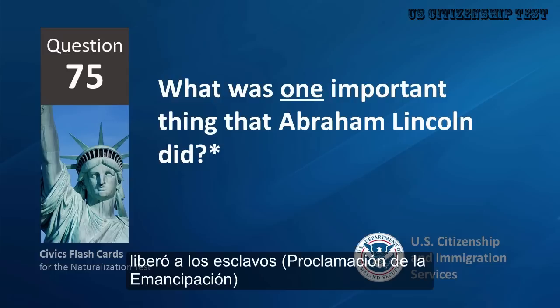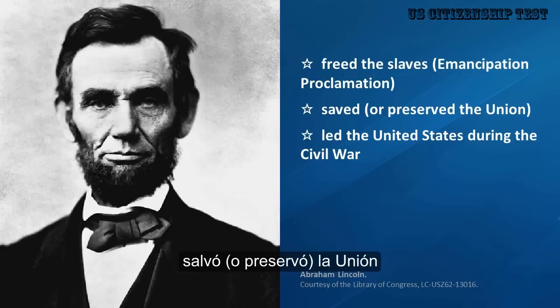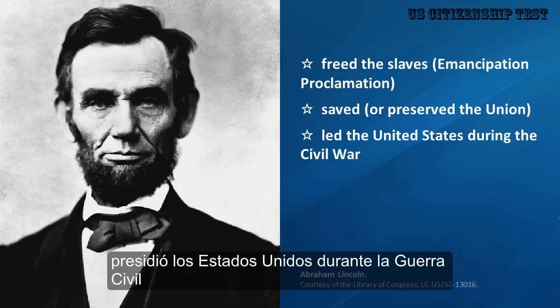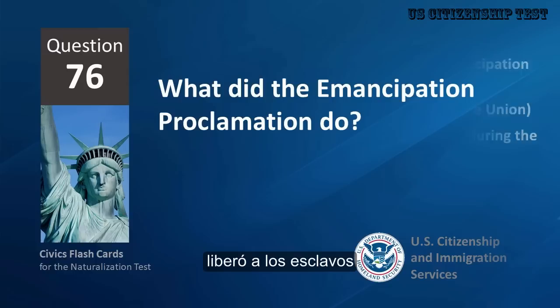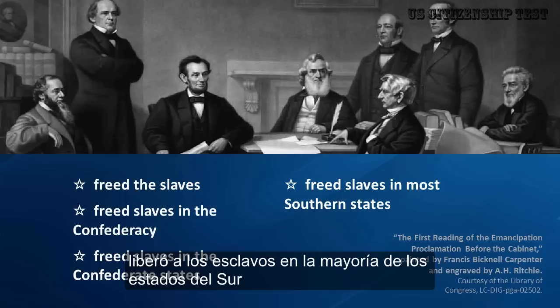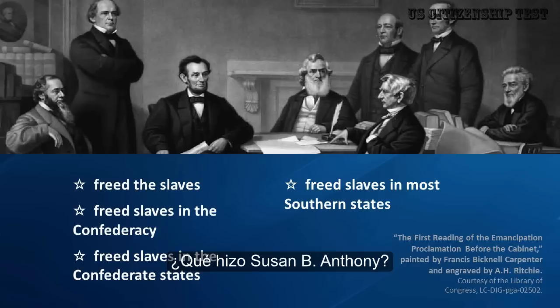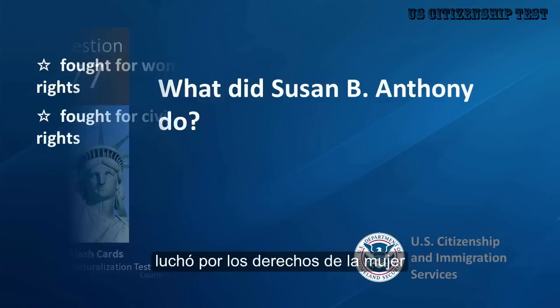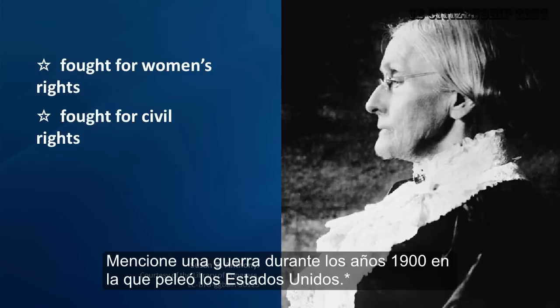What was one important thing that Abraham Lincoln did? Freed the slaves, Emancipation Proclamation, saved or preserved the Union, led the United States during the Civil War. What did the Emancipation Proclamation do? Freed the slaves, freed slaves in the Confederacy, freed slaves in the Confederate States, freed slaves in most Southern States. What did Susan B. Anthony do? Fought for women's rights, fought for civil rights.